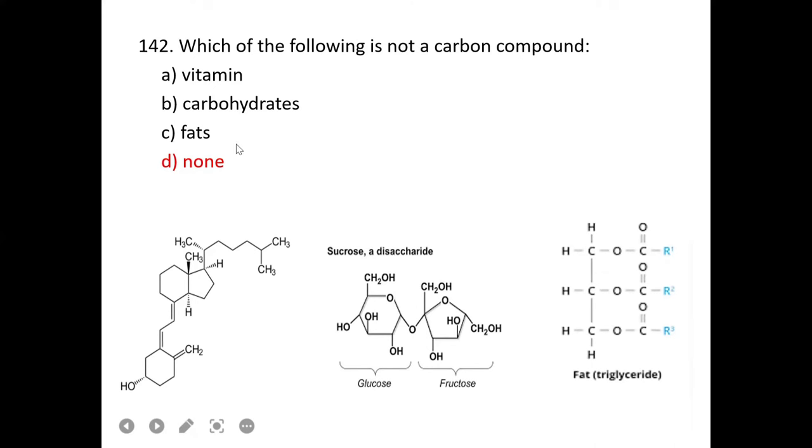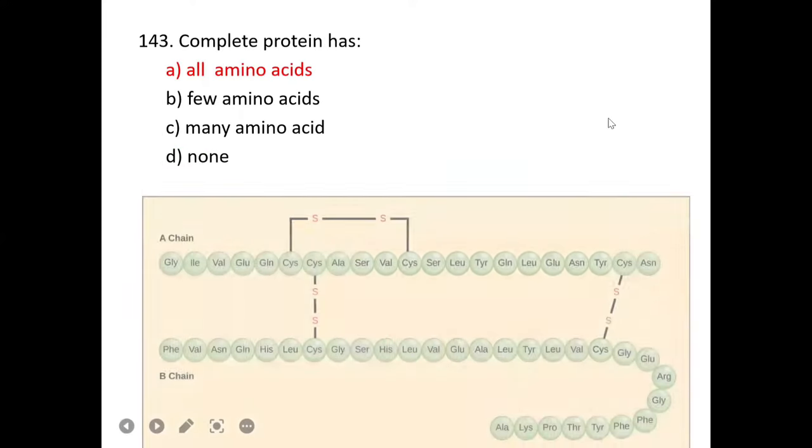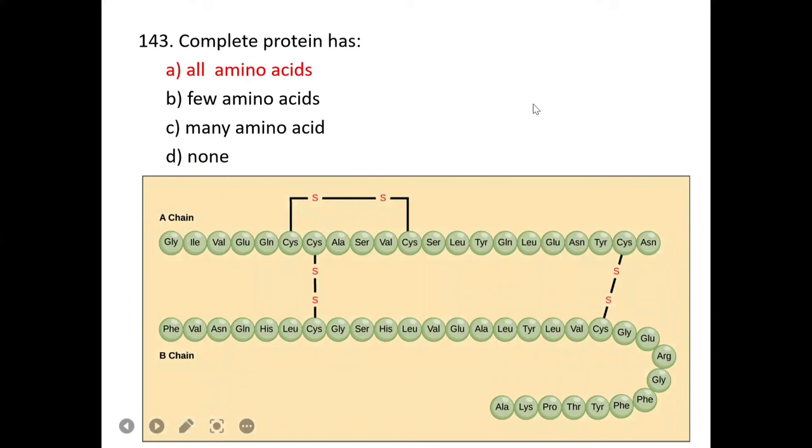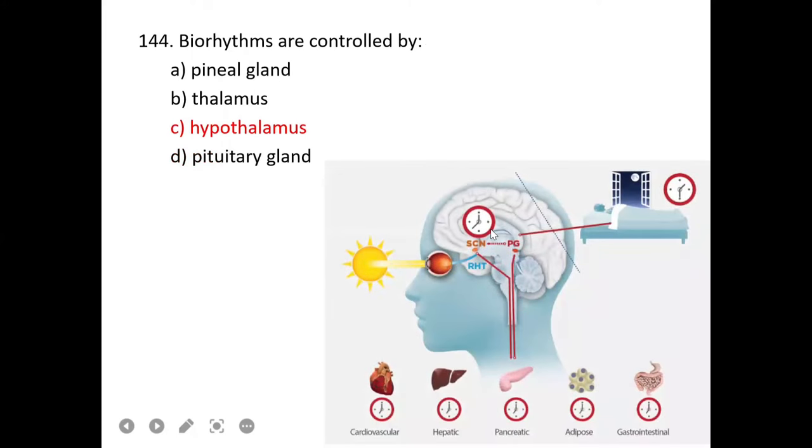Ti plasmid cannot survive above 28 degrees Centigrade. Ti plasmid is found in Agrobacterium and its optimum temperature is 28 degrees Centigrade. DNA microarray is the replacement of which previous technique? DNA microarray is the replacement of Southern blotting.